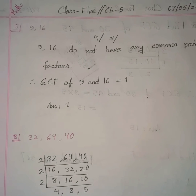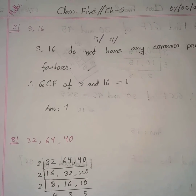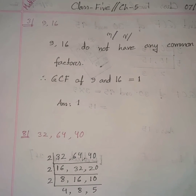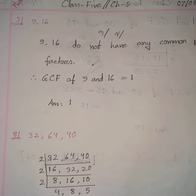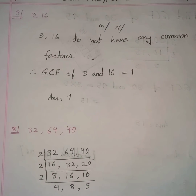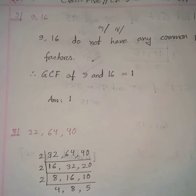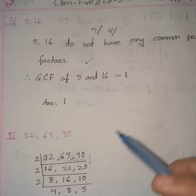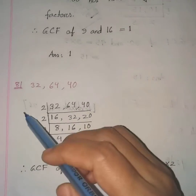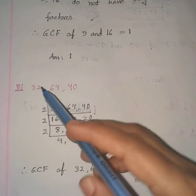You should know the rule: if numbers do not have any common prime factors, then the GCF of those numbers is 1. Now come to problem 8 — we have to find the GCF of 32, 64, and 40.